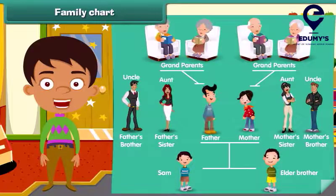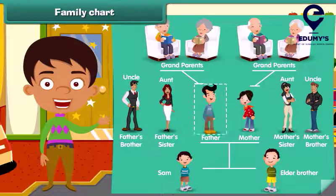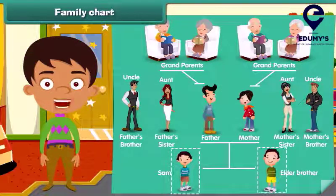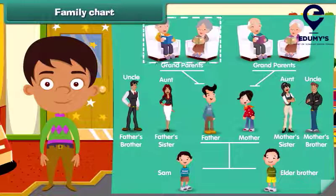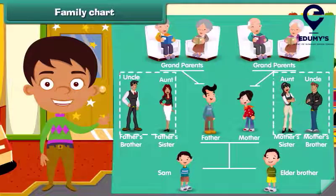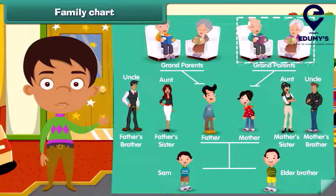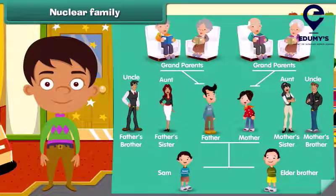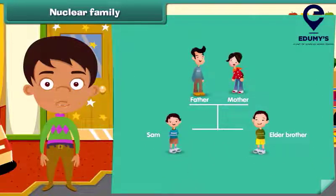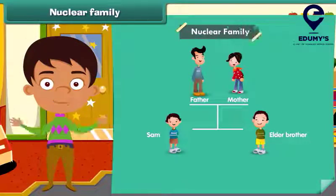Dear, let's look at Sam's family. She is Sam's mother and he is Sam's father. He is Sam's elder brother. They are his parental grandparents. They are Sam's uncle and aunt. And they are his maternal grandparents. Sam lives with his mother, father and elder brother. This is an example of a nuclear family.